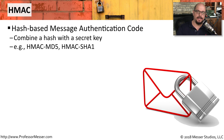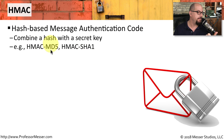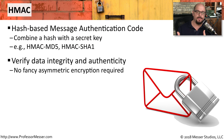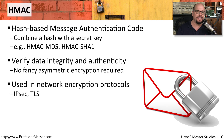A very fast form of hashing is HMAC, or Hash-based Message Authentication Code, where you combine a hash with a secret key. Commonly, you'll see this referred to as HMAC-MD5 or HMAC-SHA-1. One of the benefits of HMAC is it not only provides the data integrity you'd get with a hash, but it also provides authenticity — without using the slower asymmetric encryption. This is why you commonly see HMAC used for network protocols like IPsec or TLS.